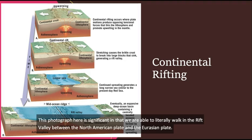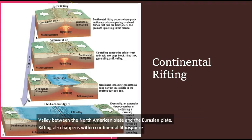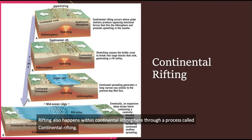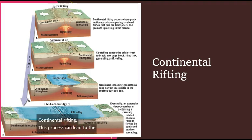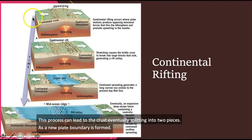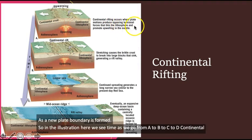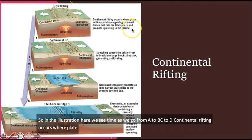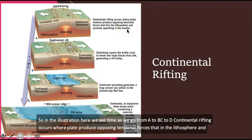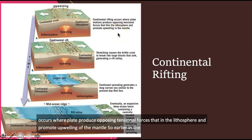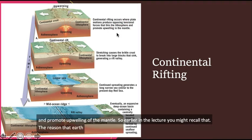Rifting also happens within continental lithosphere through a process called continental rifting. This process can lead to the crust eventually splitting into two pieces as a new plate boundary is formed. So in the illustration here, we see time as we go from A to B to C to D. Continental rifting occurs where plate motions produce opposing tensional forces that thin the lithosphere and promote upwelling of the mantle.